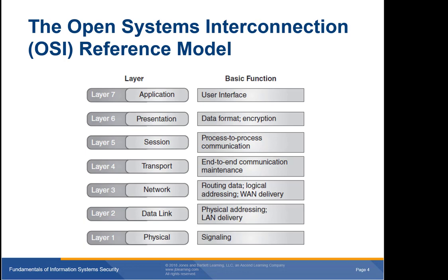Next is the transport layer, responsible for breaking data into packets and properly transmitting it over the network. Flow control and error checking take place at the transport layer. The network layer is responsible for the logical implementation of the network. One very important feature of the network layer is logical addressing. In TCP/IP networking, logical addressing takes the familiar form of IP addresses.